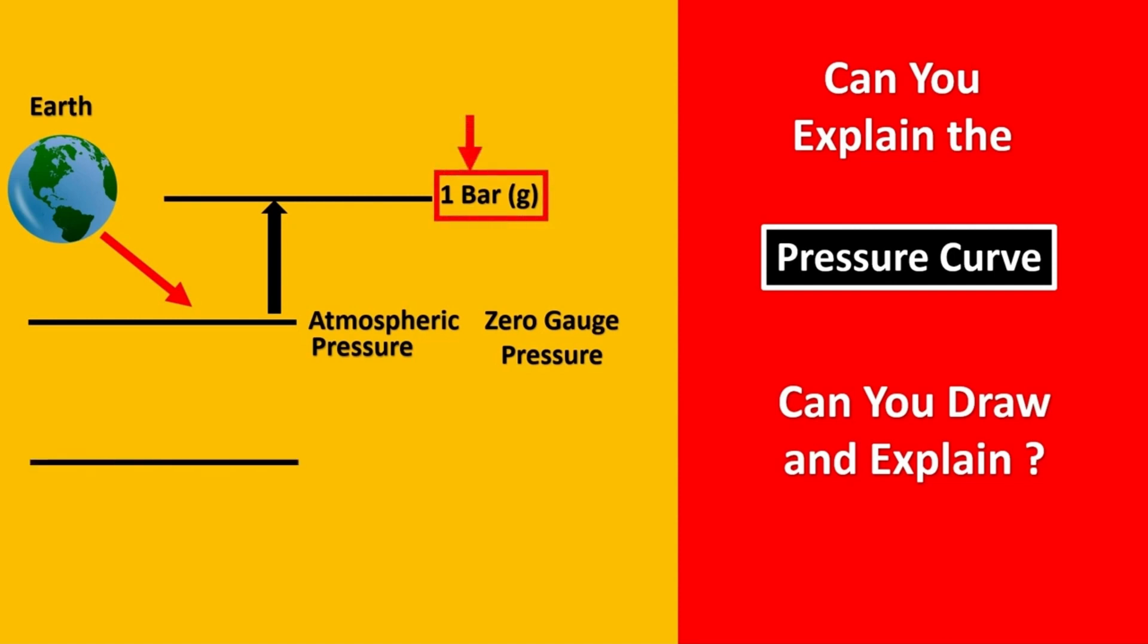Once you know about one bar gauge, if I look at what absolute pressure is, it's the pressure which absolutely has no presence of any pressure at all.